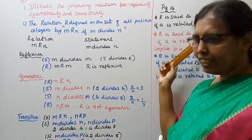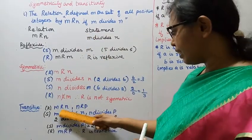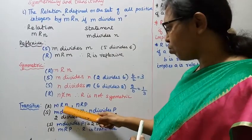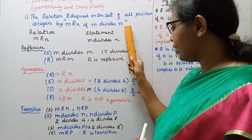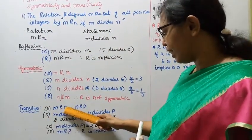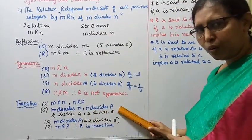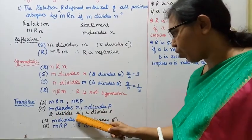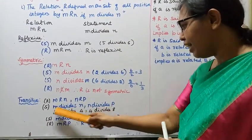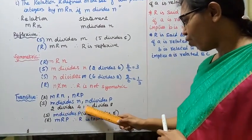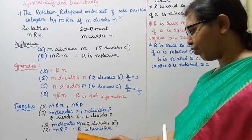For transitive: if M is related to N and N is related to P, then check M is related to P. The statements are: M divides N, N divides P. Example: 2 divides 4, and 4 divides 8, therefore 2 divides 8. So M is related to P. Therefore R is transitive.